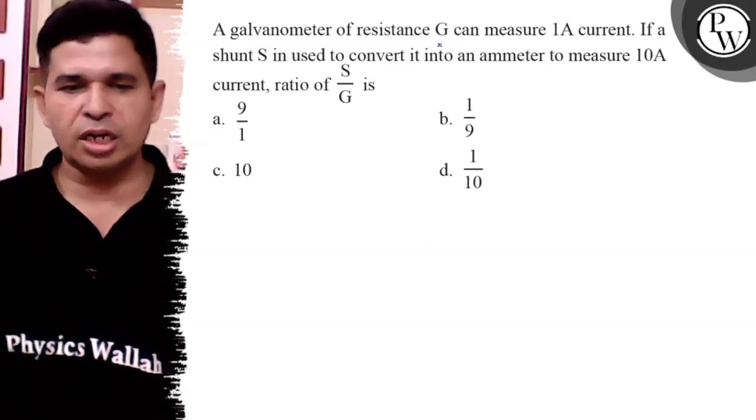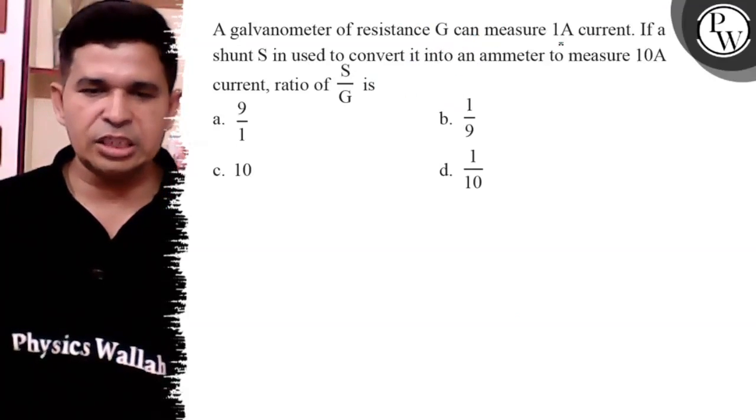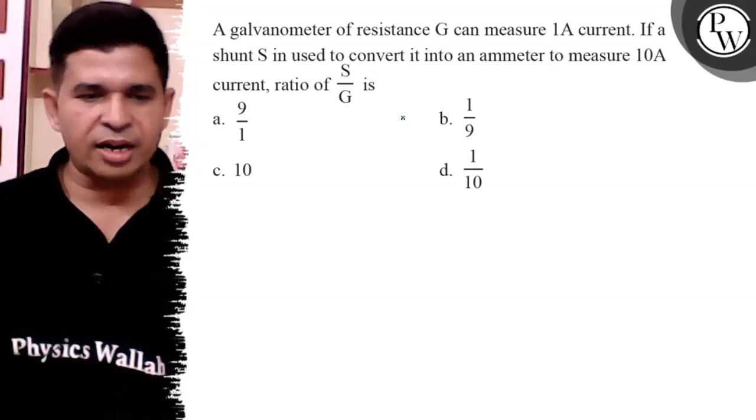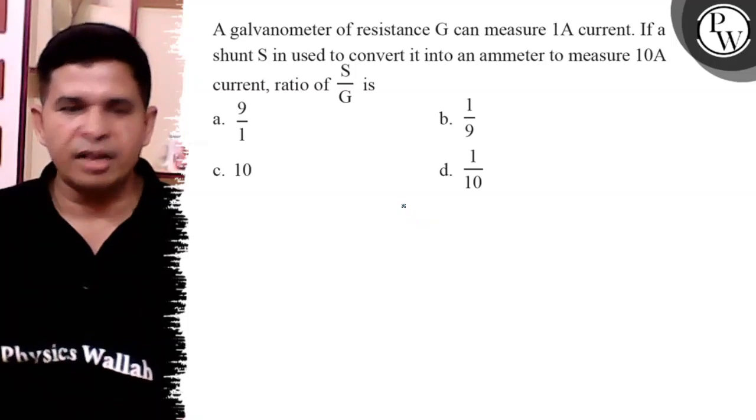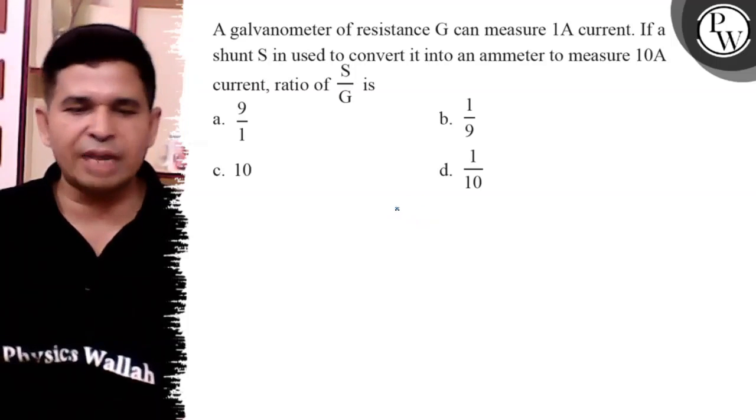Hello Bakcho, let us see this question. A galvanometer of resistance G can measure 1 ampere current. If a shunt is used to convert it into a meter of 10 ampere, what is the ratio of shunt to the galvanometer resistance?